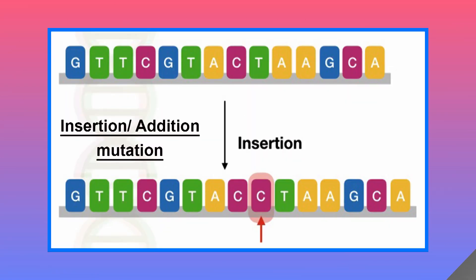The point mutation which occurs due to addition of one or more extra nucleotides to a gene or cistron are called insertion mutations. The addition of even a single nucleotide will change the entire reading frame and the triplet codon message using which a protein is tailored.